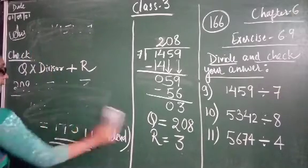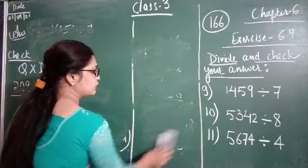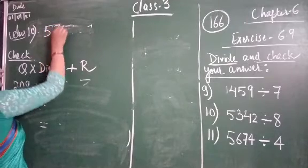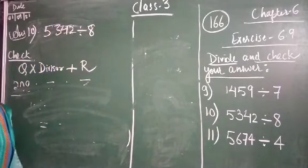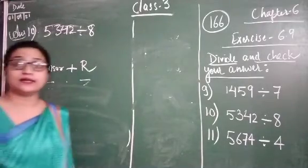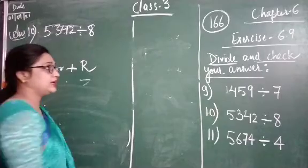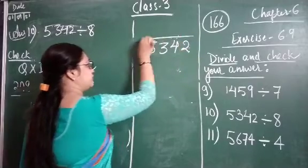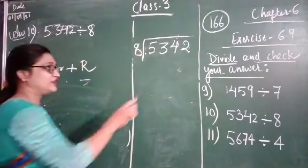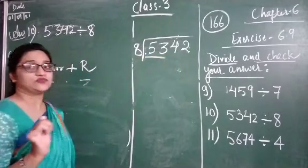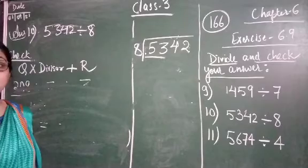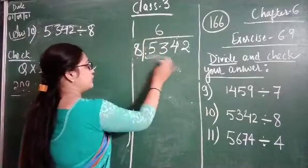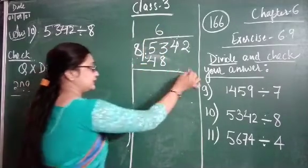Question number 10 is 5342 divided by 8. It is also the same — first we have to divide the numbers and then check them. Let us divide 5342 by 8. Since 5 is less than 8, we take 2 digits: that is 53. 53 is not in the table of 8, so we need the number less than 53. 8 sixes are 48.